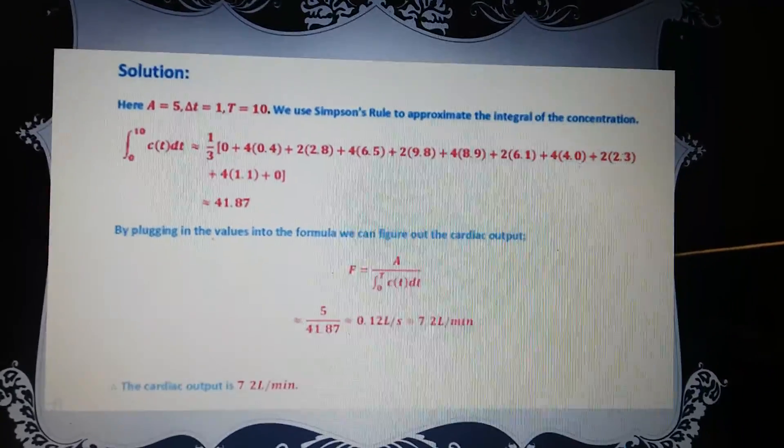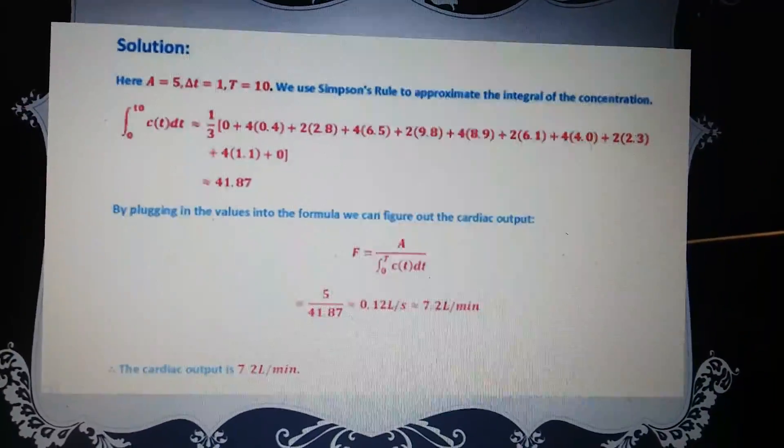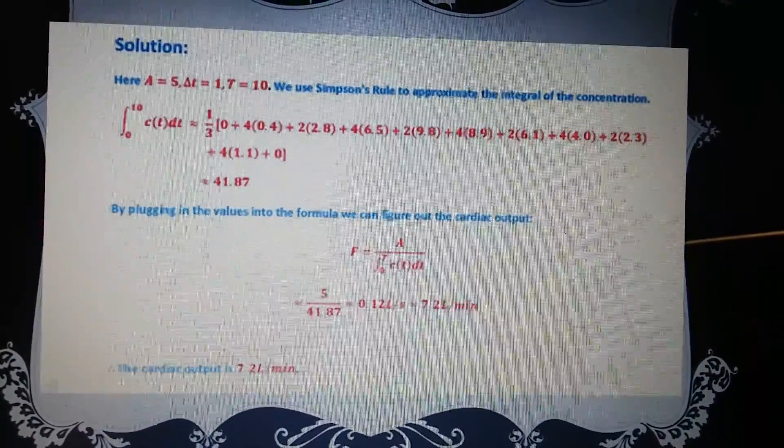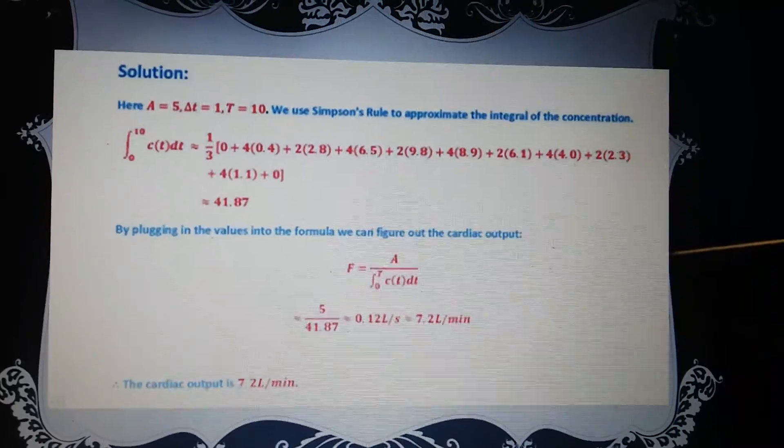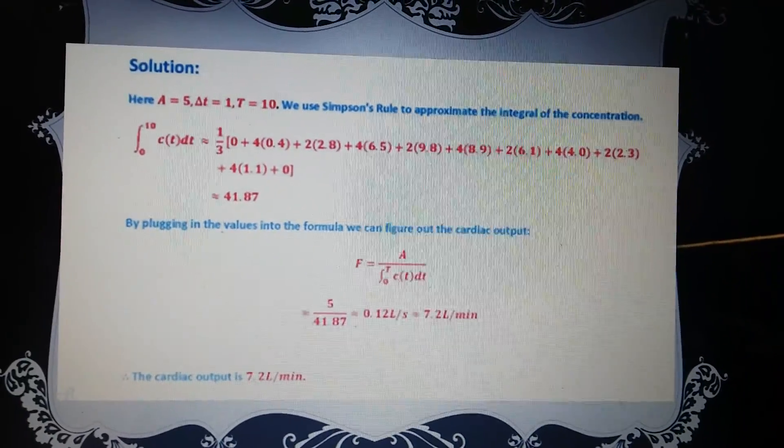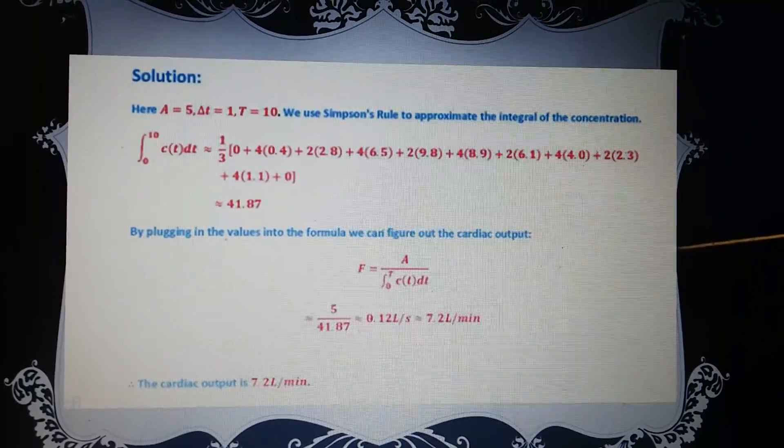Now the solution, the cardiac output is 7.2 liters per minute. It's amazing how we can find these results by using equations that we are taught in calculus.